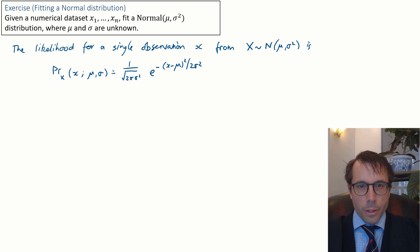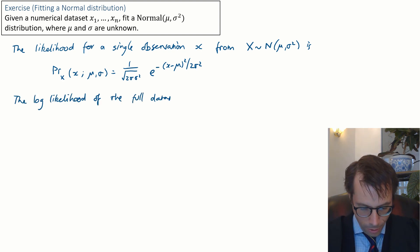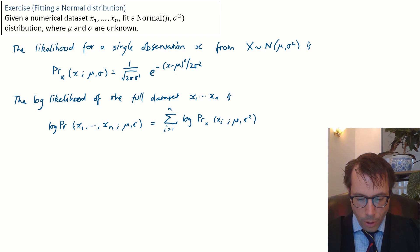Next, the log likelihood of the entire dataset. The log likelihood of the entire dataset is sum of the log of the likelihood of each individual observation. We should just note down here the assumption of independence. It wasn't stated in the question that all the x's are independent. It's a choice that we made as modelers, so we ought to write it down.